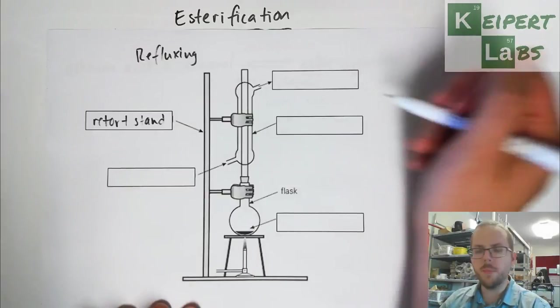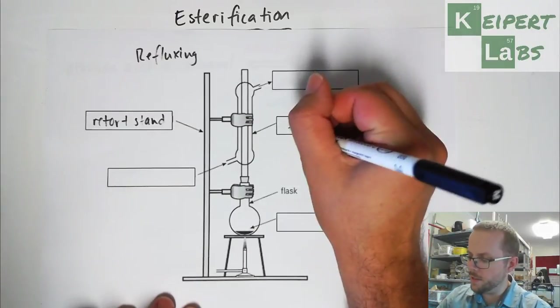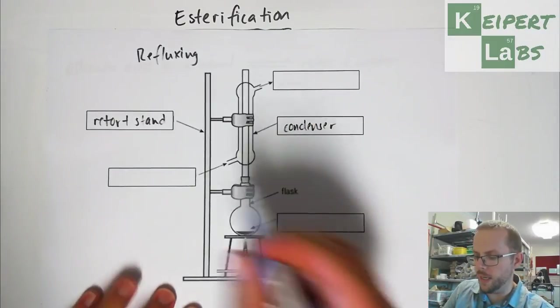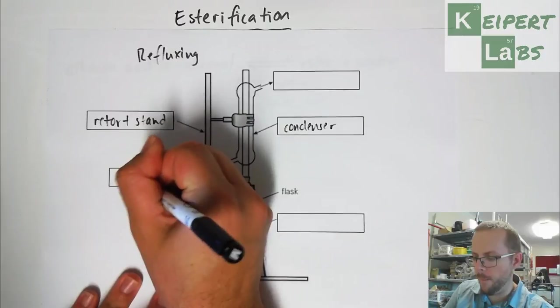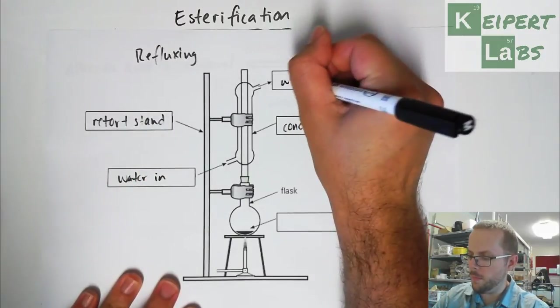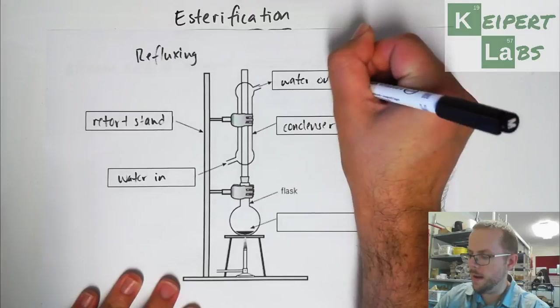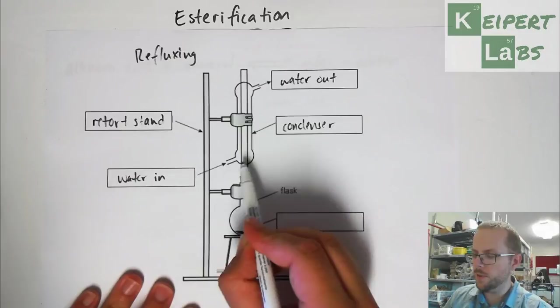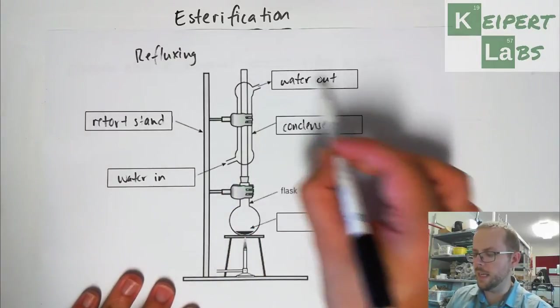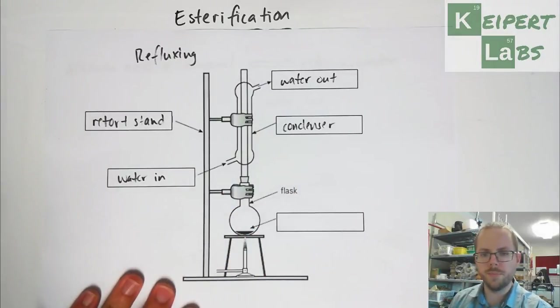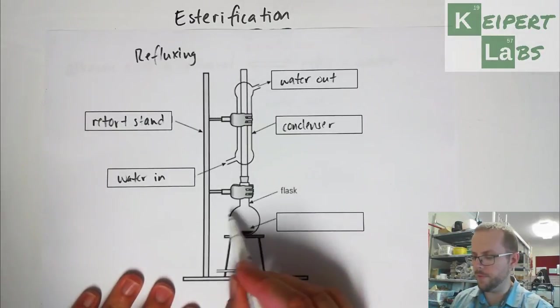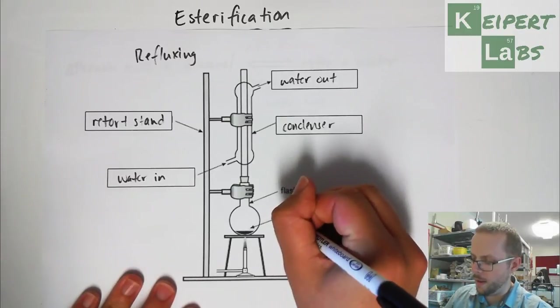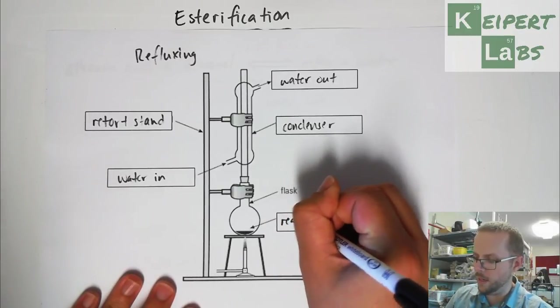So what we have over here, you might remember when we looked at distillation in the past, that this is called a condenser. So what happens is that we get water going in at the bottom, and we get water going out at the top. So water is pumped in from the tap at the bottom, fills up the outside layer of this condenser, and then leaves through the top. We have a flask down the bottom here, a round bottom flask specifically, over the top of a Bunsen burner on a tripod.